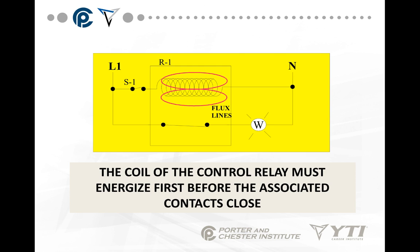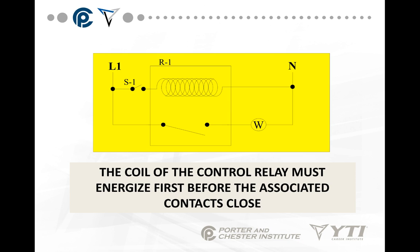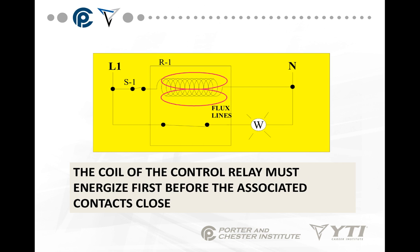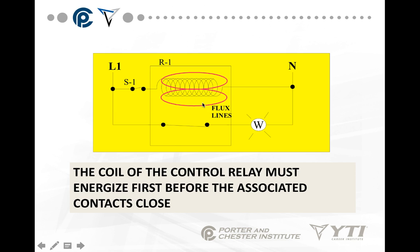When the coil energizes, the contacts close and energize whatever load is in the circuit. Then we de-energize it — it opens and goes back to its normally open position. So those are the two basic components of the circuit: we have our switch and we have our coil, and switches come in a variety of different poles and throws.